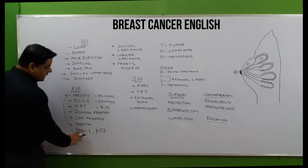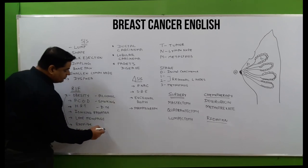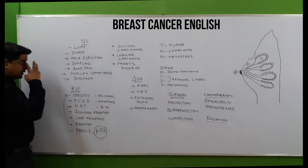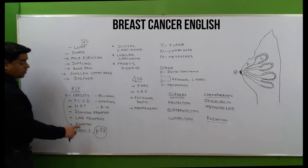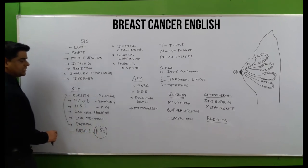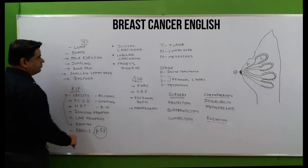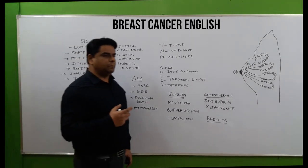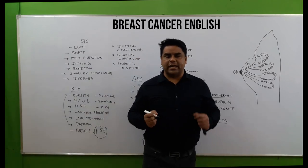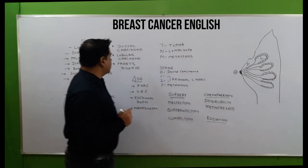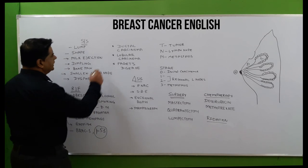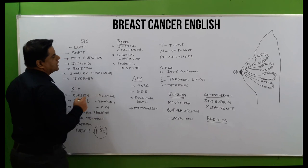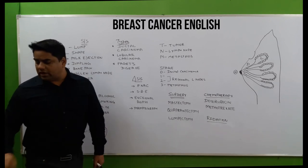Very important risk factors are BRCA1, BRCA2, and p53 gene mutations — oncogenes and tumor suppressor genes. Mutations in BRCA and p53 lead to excessive proliferation in the breast of different kinds of cells.